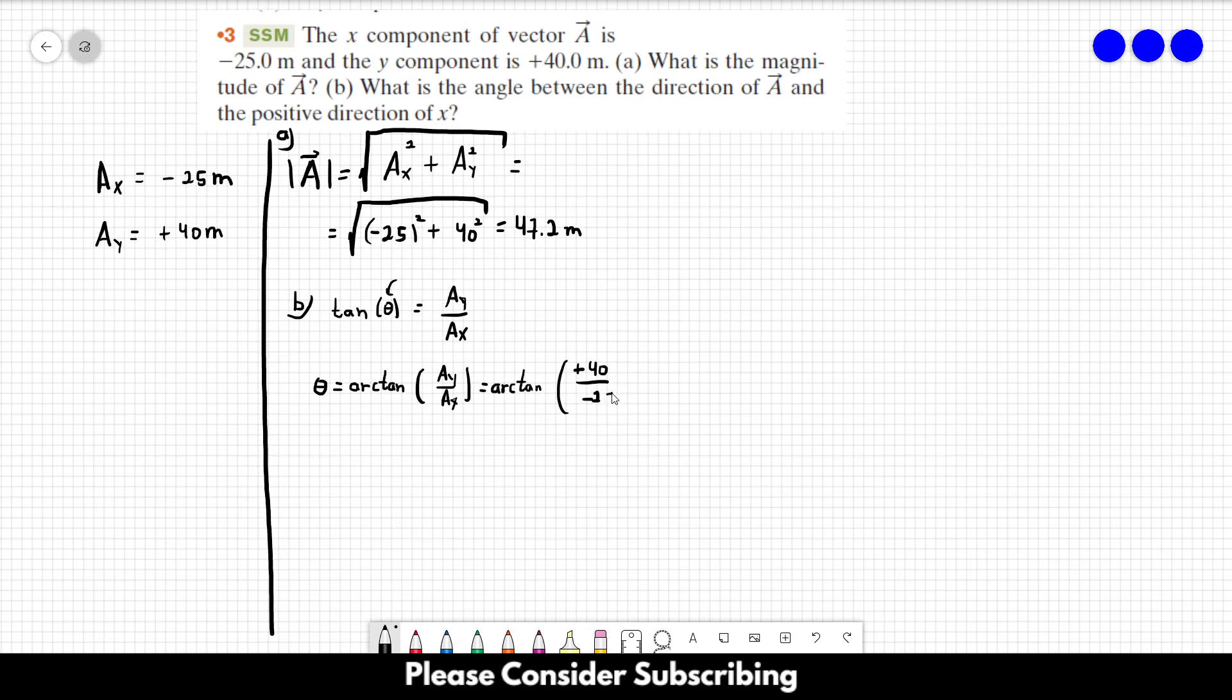And this gives us two different answers. This gives us minus 58 degrees or plus 122 degrees. Because the tangent function is the same for two different angles.